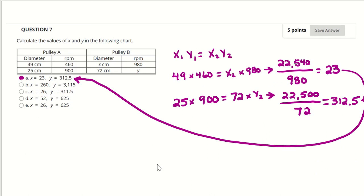In question number seven, we need to calculate the x and y values. For the x value, we know the diameter of 49 centimeters, 460 RPM equals x centimeters times 980 RPM.